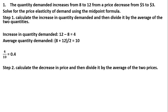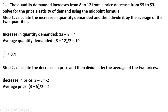Step two: we're going to do a similar thing, but this time for the price. Since quantity demanded increases, it means the price fell. We calculate the decrease in price and divide it by the average of the two prices. The price change is 3 minus 5, which gives minus $2. The average price is 3 plus 5 equals 8, divided by 2 is 4. So minus 2 divided by 4 is minus 0.5.